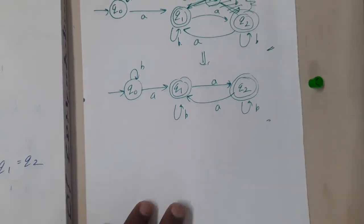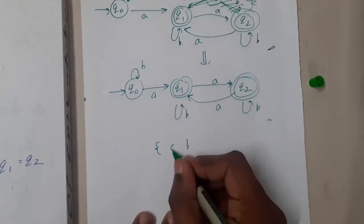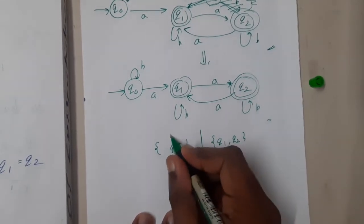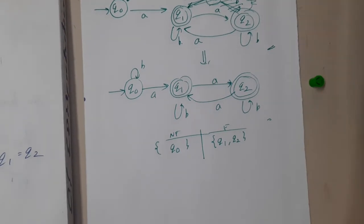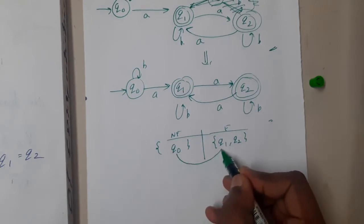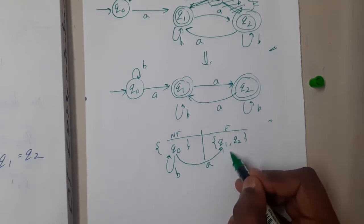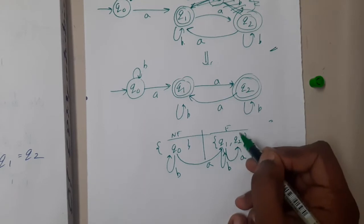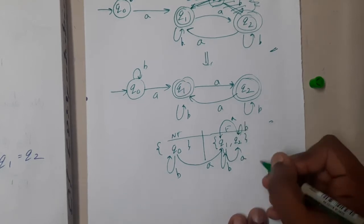We make sets: the first set is non-final states and the second is final states. Among q0, q1, q2 — q0 is non-final; q1 and q2 are final. Now we analyze: from q0 on 'a' go to q1, on 'b' stay at q0. From q1 on 'a' go to q2, on 'b' stay at q1. From q2 on 'a' go to q1, on 'b' stay at q2.